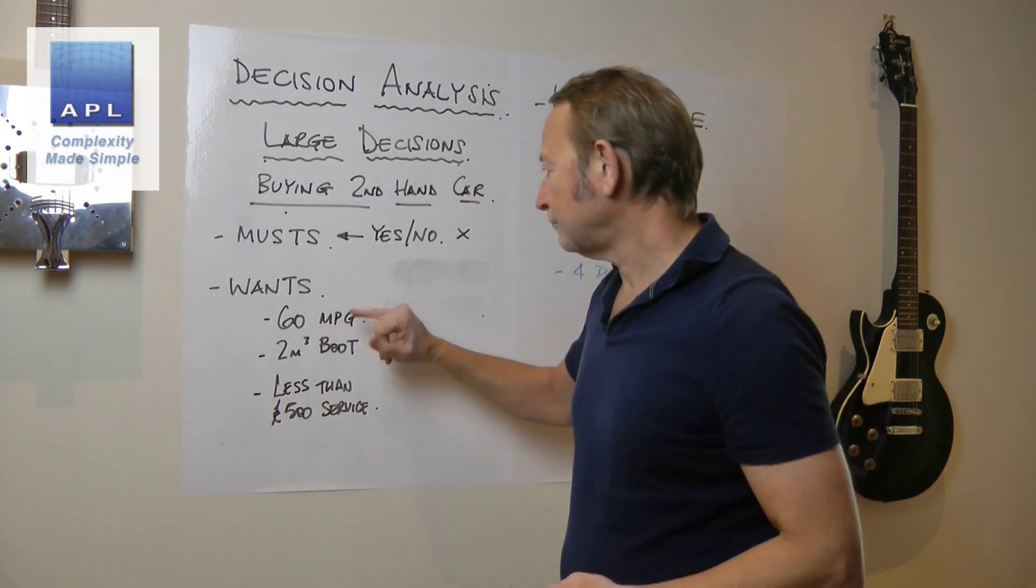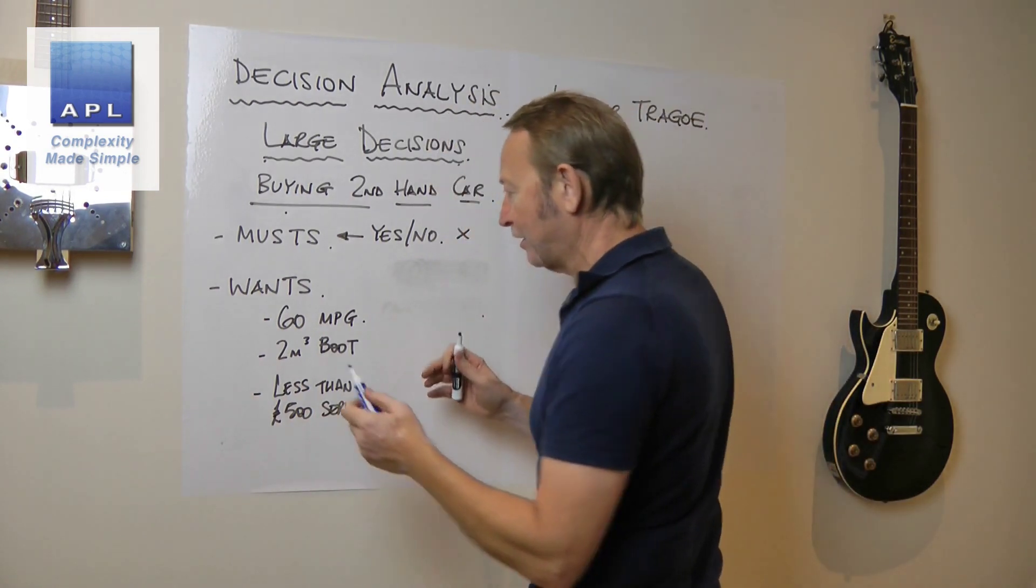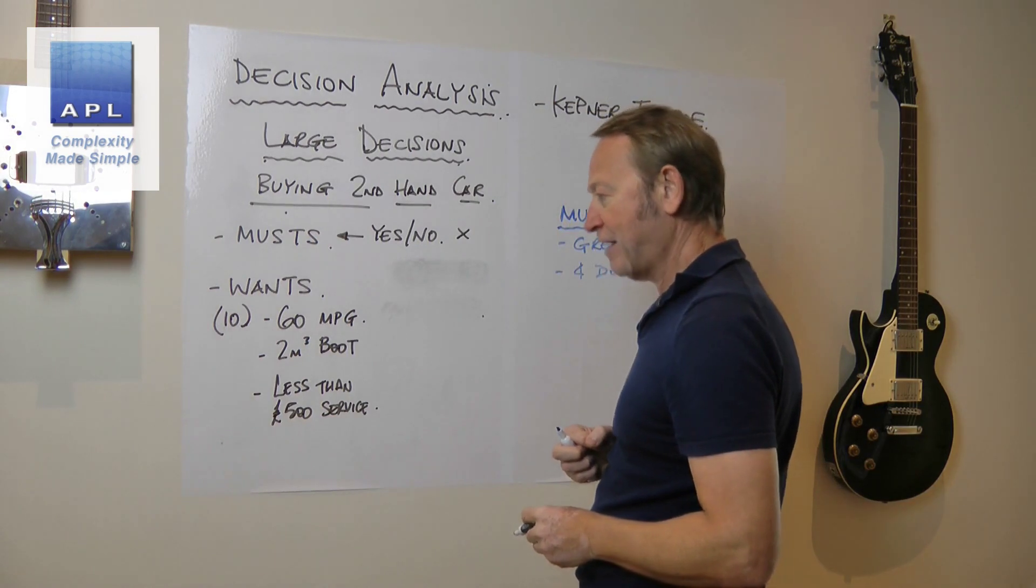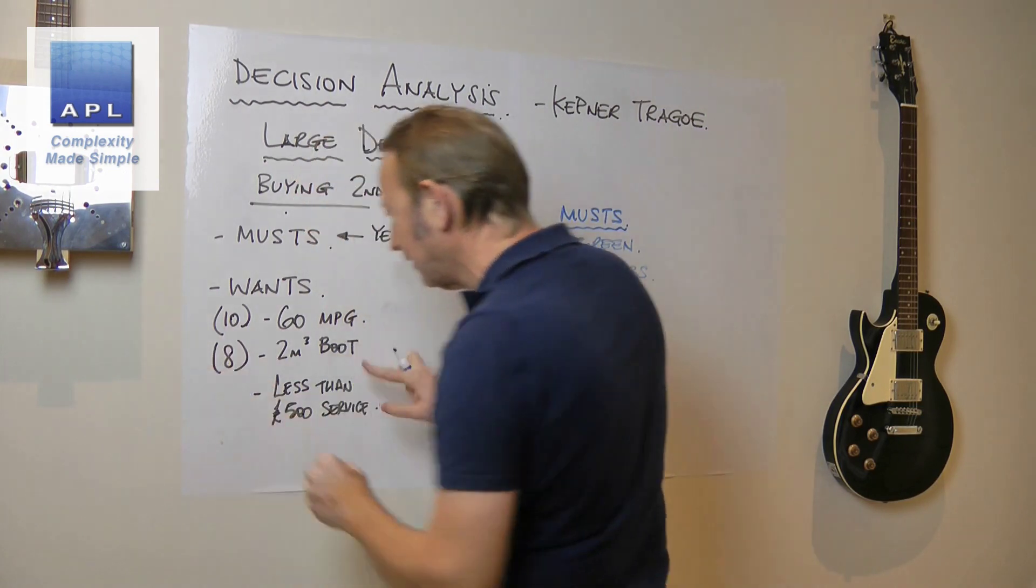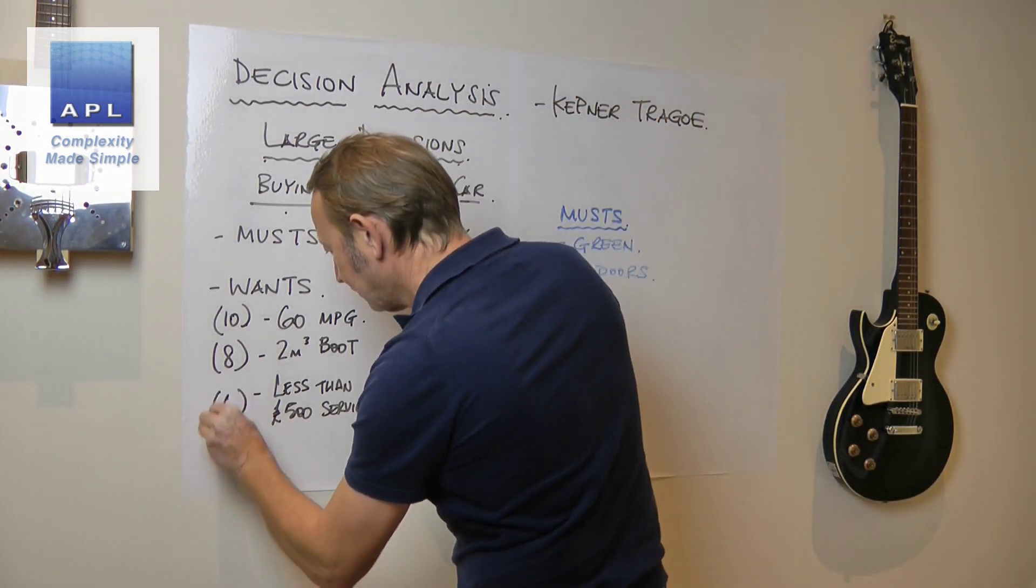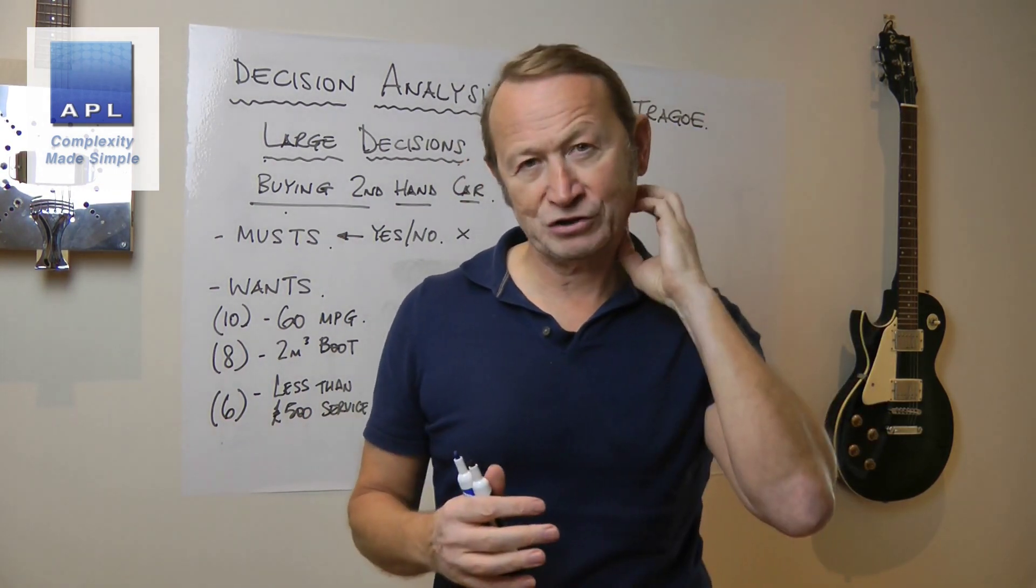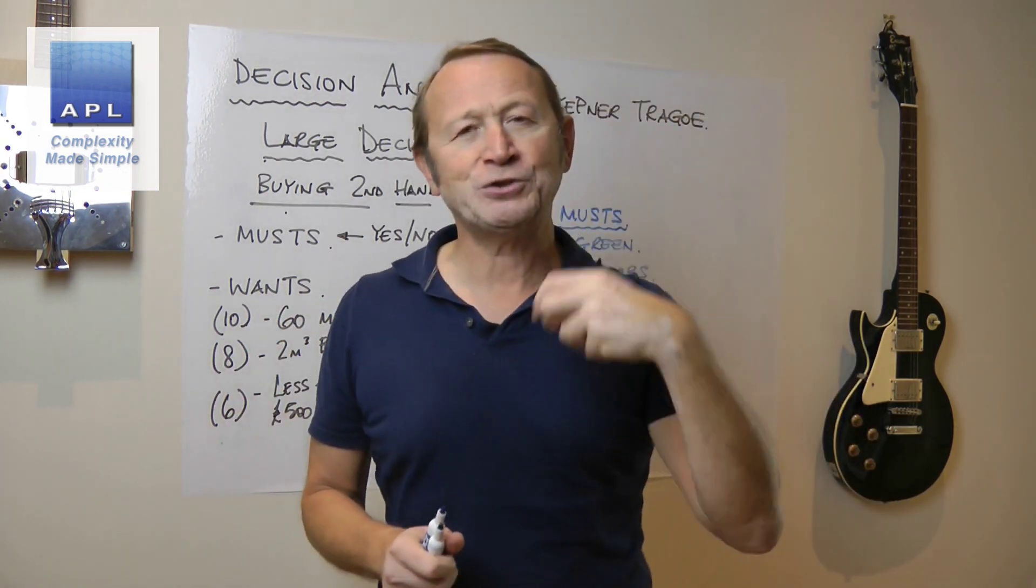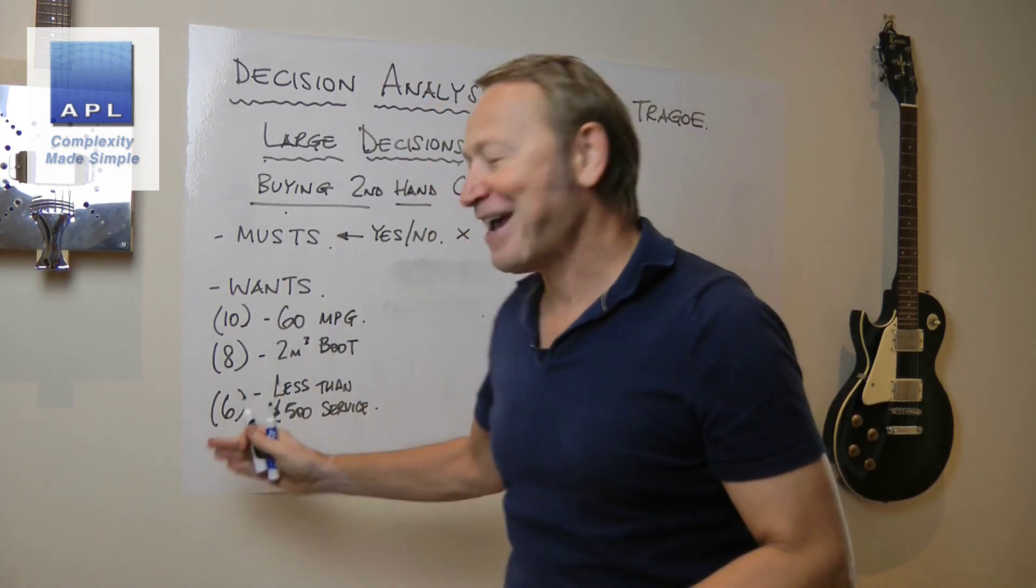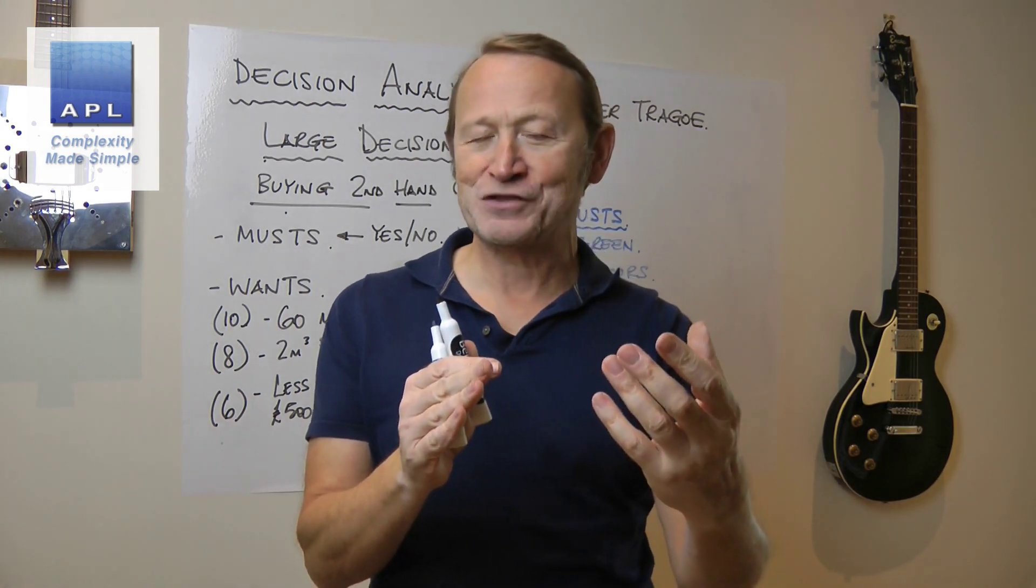Now I can give them a score before I start - how important are they. The 60 miles per gallon is absolutely crucial because of the miles I drive every year, so I'm giving that a weight of 10. The boot is also quite important, not absolutely crucial, so I'm giving it a weight of 8. The less than 500 pounds for service is not so important - I'm giving it a weight of 6. You give them a weighting before you start, and that stops you getting biased. If there's a solution you personally really want, you'll have a tendency to weight the features to choose that particular car.